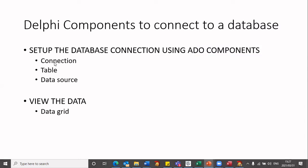These components are: the first one is your ADO connection, then you have the table component and you have the data source component. And finally we make use of a data grid, and this is used to view the data that is in the table.